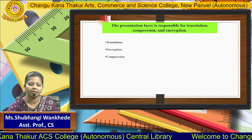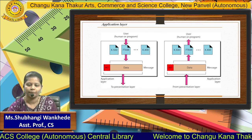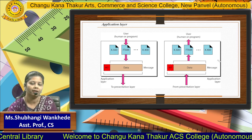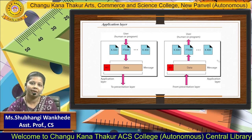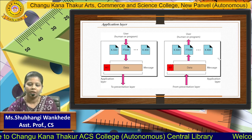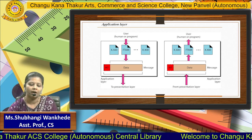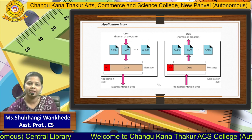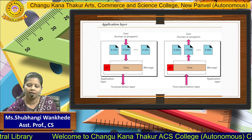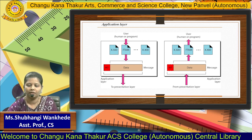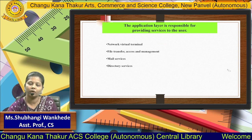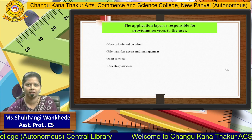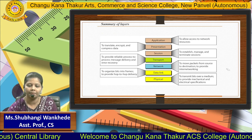The application layer is the seventh and topmost layer. It has the huge responsibility of accepting data from the user as well as delivering the final data to the receiver. The user gives a program or message to this layer, and it passes it to the presentation layer. At the receiver side, the application layer gives the same program or message to the user. Its responsibilities include acting as a network virtual terminal, file transfer, mail services, and directory services.